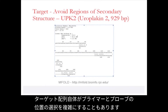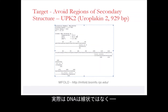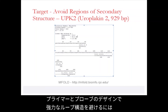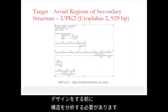The target itself may cause complications when choosing the positions for your primers and probes. In the real world, DNA is not linear but tends to fold and form secondary structures, as can be seen in this example taken from a short stretch of the human uroplakin 2 gene. You want to avoid placing primers and probes directly over regions that show strong loops, so an analysis of the structure is necessary before finalizing your design.